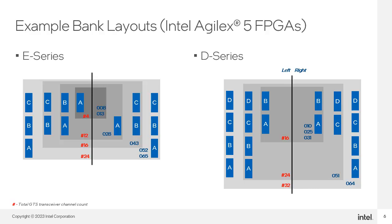The number of GTS transceiver banks varies depending on the density of the FPGA and its package variants. This slide shows the GTS transceiver banks found in Agilex 5 E series and D series devices, particularly in the B32A package. The dark gray square in the center represents the smallest package; larger and lighter squares represent increasingly larger packages. FPGA family member sizes are indicated in blue, and the number of transceivers available in the package are shown in red. For the E series, the smallest two members have one bank; the 028 has three banks; the 043 has four banks; and the 052 and 065 have six banks total.